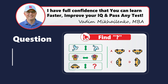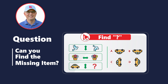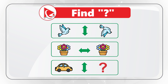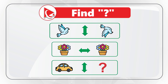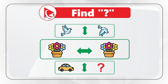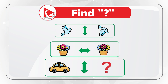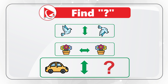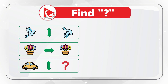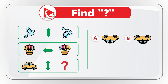Here's a very interesting question which is frequently used to test your analytical reasoning and spatial reasoning. You are presented with a set of objects and you need to find the missing item. The set consists of three rows. In the first row you see a pigeon, an arrow, and then the pigeon again. In the second row you see a flower, an arrow, and then the flower again. In the third row you see a car, the arrow, and then the missing item. You need to select the missing item out of four possible choices — A, B, C, and D.